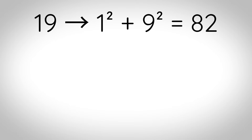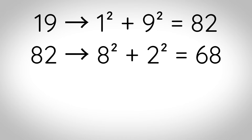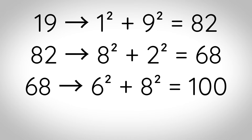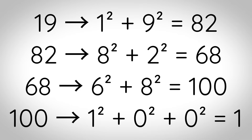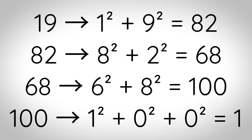Happy primes: a happy number is a number that eventually reaches one when you repeatedly replace the number with the sum of the squares of its digits. For example, 19 changes to 1² plus 9² which is 82, which changes to 8² plus 2² which is 68, which changes to 6² plus 8² which is 100, and then 100 gives us 1² plus 0² plus 0² which is 1. So 19 is happy. Some of these numbers are prime.